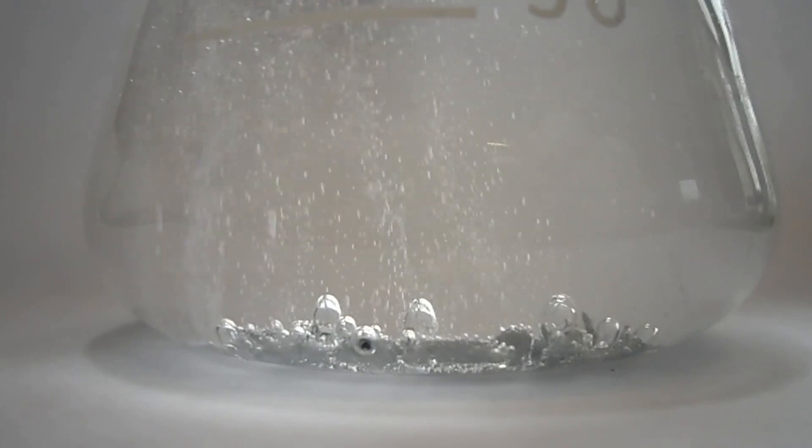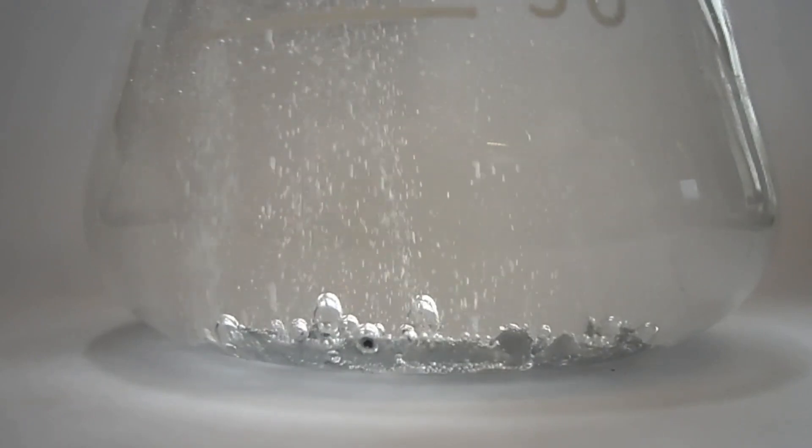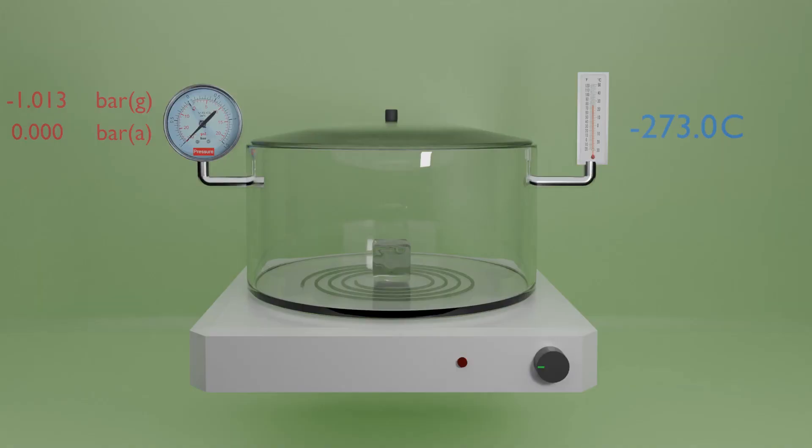It is worth noting that the pressures used are relative pressure, bar G, and absolute pressure, bar A, and the difference between them is the value of atmospheric pressure, meaning that absolute pressure is always higher than relative pressure by a value of 1.013 bar.